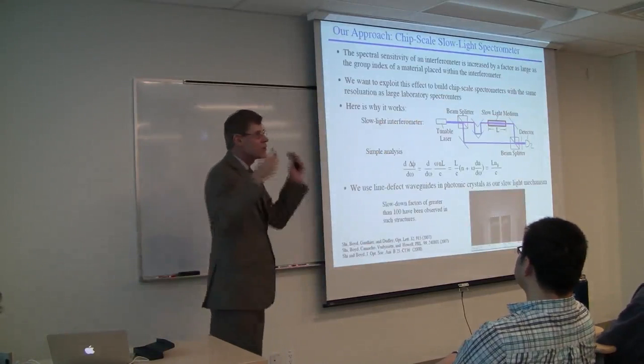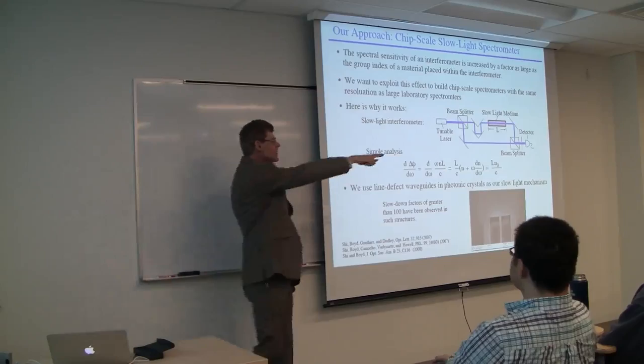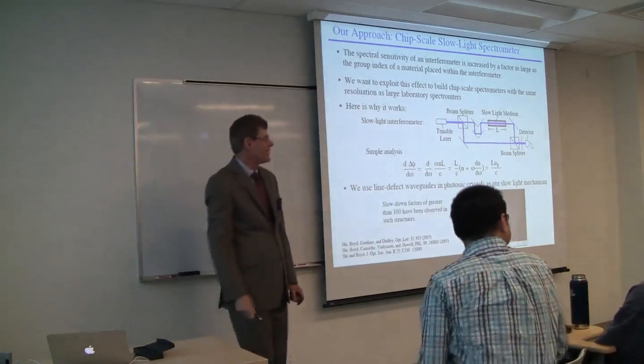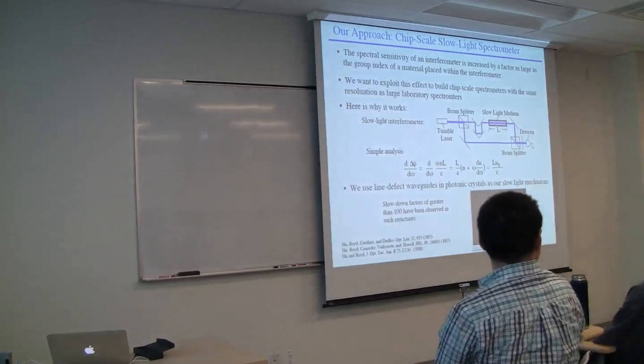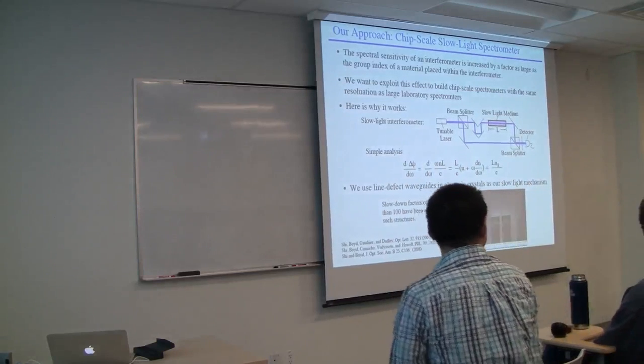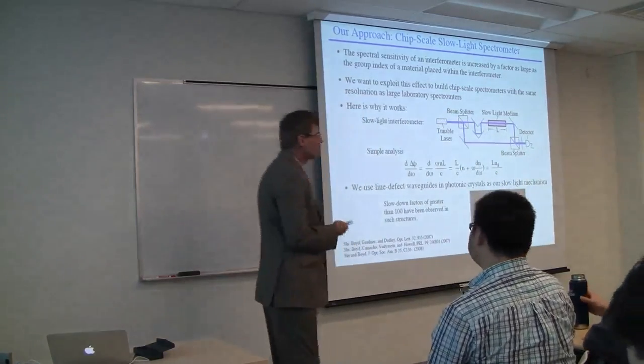Why does slow light methods work for this? Imagine a Mach-Zehnder interferometer, and I will add a path length L of slow light material here.